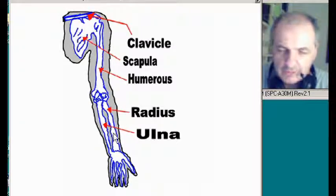The radius is always on the side of the thumb. And the ulna is always on the side of the pinky. Both hands, that's a truism.